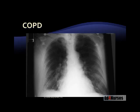Next, assess the pleura — it's very dark, darker than we would anticipate. Looking for infiltrates, I'm not seeing any infiltrates on this particular x-ray. Lastly, looking at the mediastinum — notice how big that heart is. It's not unusual for a patient who has COPD to also have heart failure, so we could have some heart failure going on in this patient too.